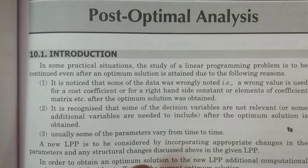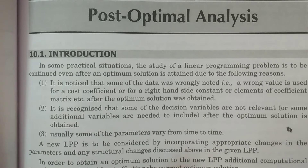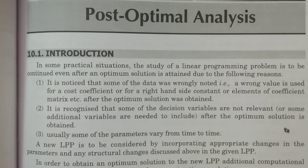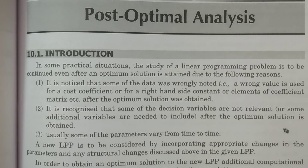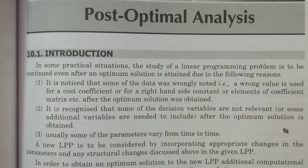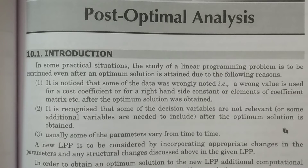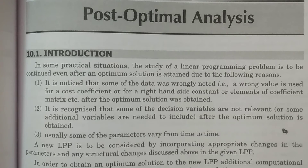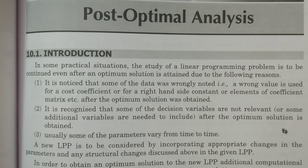After it was recognized or identified — after the optimal solution was already calculated — it was then discovered that some particular value of either the cost coefficient, right-hand side constant, or elements of the coefficient matrix were noted wrongly. In such a case, post-optimality is required, and the optimum solution obtained is to be changed with these corrections.